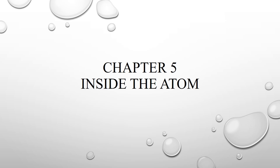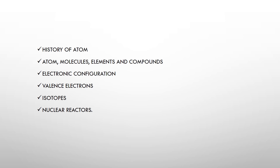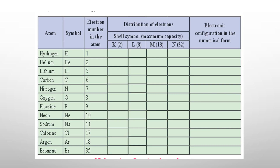Good morning, dear children. Today we are going to continue with the remaining part of Chapter 5. We have already covered the first two points and we saw what electronic configuration is, but today we are actually going to solve it — we are going to look at a lot of examples. We will be learning one concept, which is on page 33.